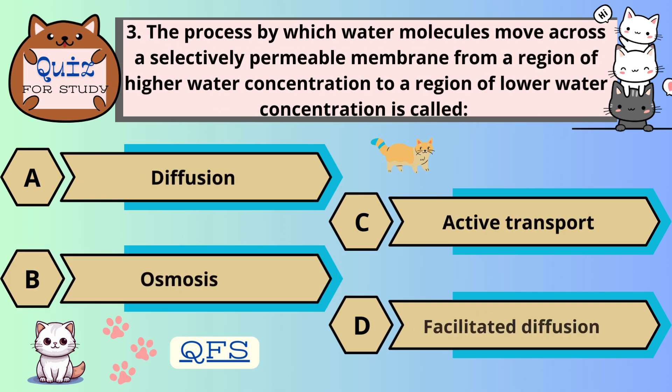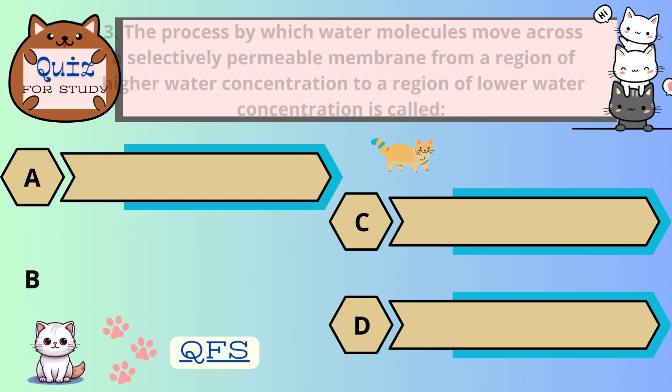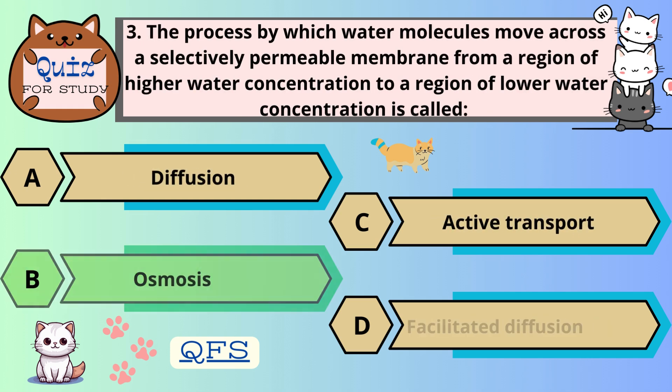Number 3. The process by which water molecules move across a selectively permeable membrane from a region of higher water concentration to a region of lower water concentration is called — the correct answer is B. Osmosis.